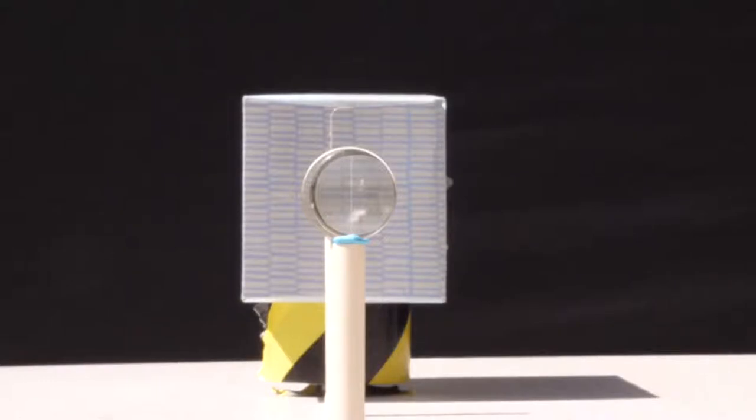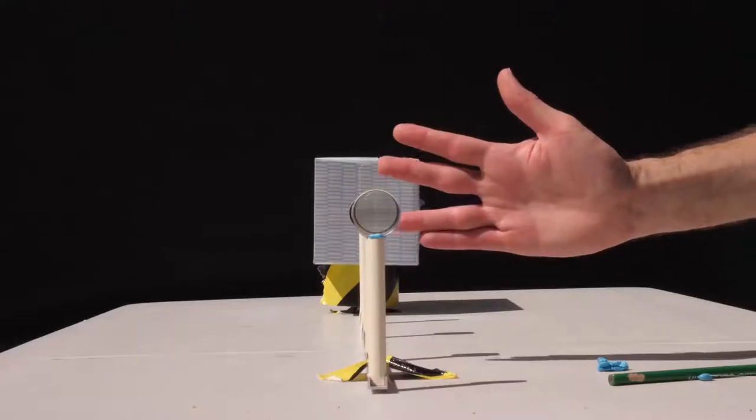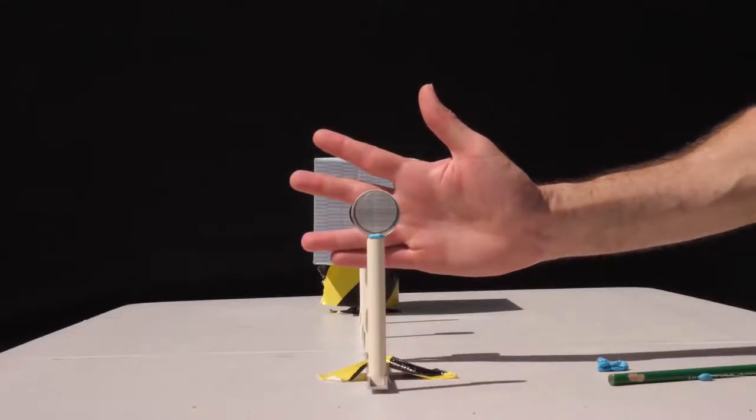Okay, so watch as I dangle something in front of the lens, how it just disappears. So this is a really cool way to make something invisible using lenses.